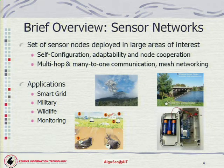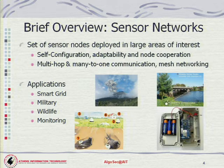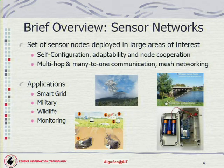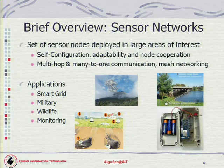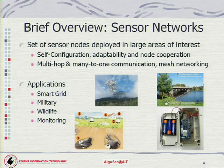Self-configuration is really important because sensor nodes are usually deployed in thousands, often in areas not easily accessed by humans. So once deployed, they need to configure themselves, start working, and adapt to environmental changes and node shifts. In terms of communication, we have multi-hop, many-to-one communication between the nodes, and there will always be more than one path for communication between the nodes and the destination — the base station — giving us mesh networking.